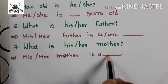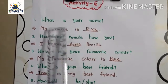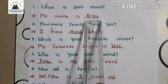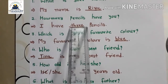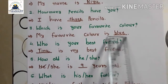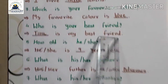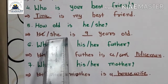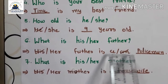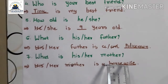Jhené aotu hoi, ee tamarun yaan philip karwaanun. Ok friends, activity 6 ma aapnei joi gaya. Ema answers are the key pretty fill up tie. What is your name? My name is Riya. How many pencils have you? I have three pencils. Which is your favorite color? My favorite color is blue. Who is your best friend? Tina is my best friend. How old is she? She is nine years old. What is her father? Her father is a policeman. What is her mother? Her mother is housewife.